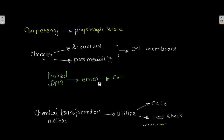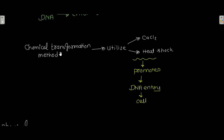The chemical transformation method utilizes CaCl2 and heat shock to promote DNA entry into the cell. Both CaCl2 and heat shock together promote the DNA entry into the cell.